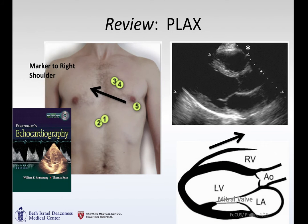When you obtain the parasternal long, you're coming here at the third or fourth intercostal space with the marker pointing off to the right shoulder. You'll see the left ventricle, left atrium, and aorta — putting the aortic valve and mitral valve in the same view.